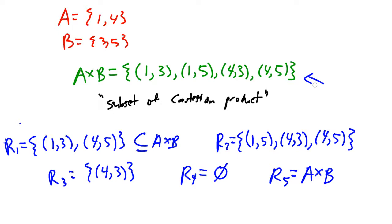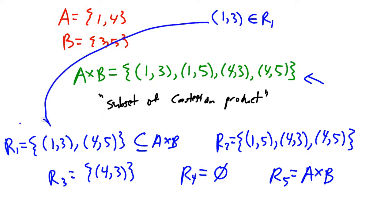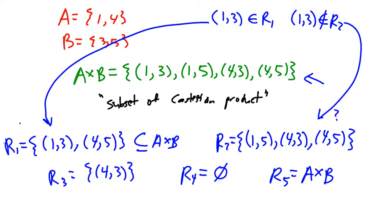That may not seem useful right now, but it will come into play in a few minutes when we talk about the meaning of relations. Let me give you a bit of notation. There are two ways of expressing that a particular ordered pair is in a relation. One way is to write (1, 3) ∈ R1 — expressing the fact that R1 does have (1, 3) in it. And of course, (1, 3) ∉ R2, because that ordered pair was missing from that relation.